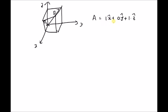This is because vector a is on the xz plane. That means the y component is 0 and the x and z components are exactly equal to 1.